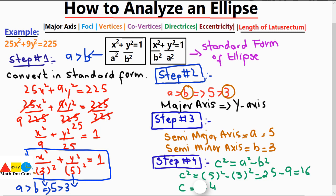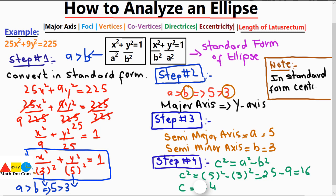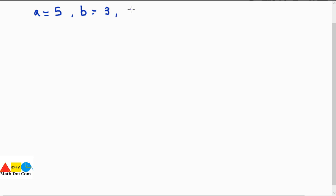One important note: whenever the ellipse is in standard form, the center of the ellipse will always be (0, 0). You follow these steps only when the equation is in standard form. So we now have a = 5, b = 3, and c = 4.